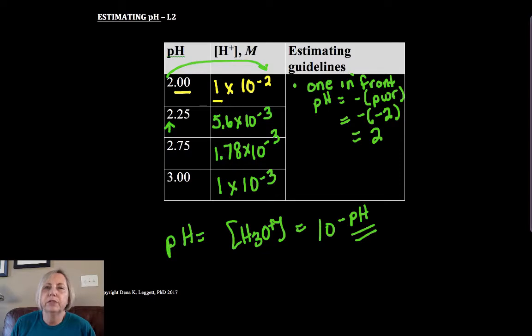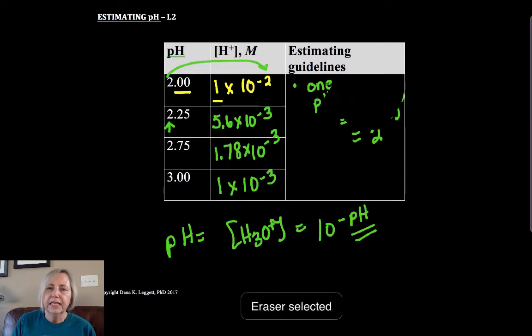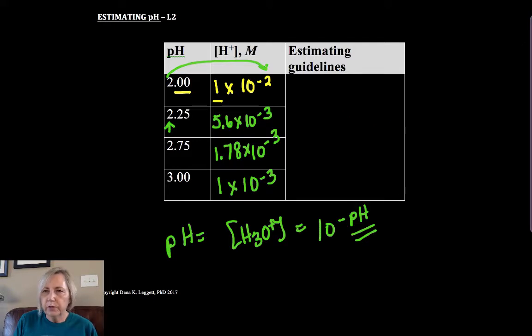Where we run into problems is when there's not a 1 in front. Now it will help you to bear in mind that as we increase our H3O plus concentration, we decrease pH - so those are inversely proportional to one another.